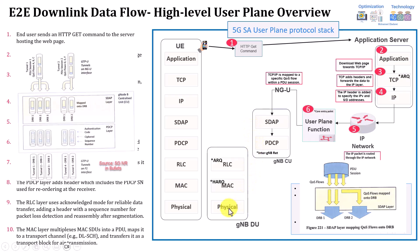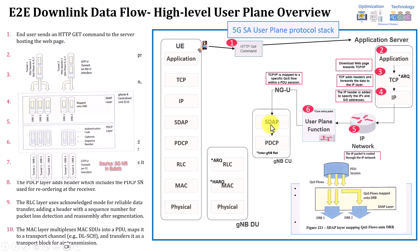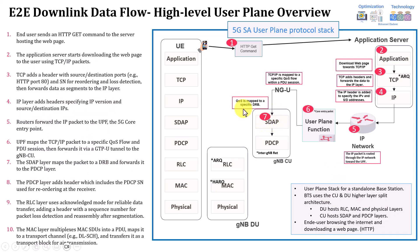The SDAP layer is mainly responsible for mapping quality of service to a specific data radio bearer (DRB). For example, if three packets arrive each with different QoS — A, B, and C — the SDAP layer maps QoS A to DRB1, B to DRB2, and C to DRB3. This is the main responsibility of the SDAP layer: mapping QoS flows to specific data radio bearers.